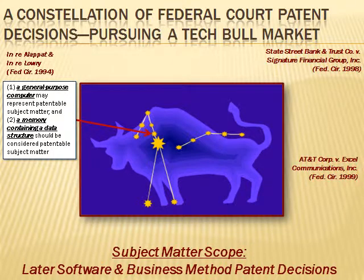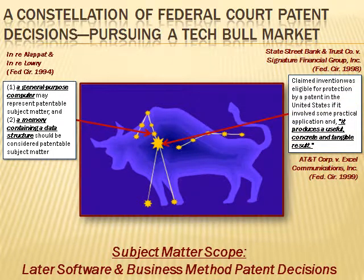Following the 1994 decisions of Allopat and Lowry, the State Street Bank and Trust Company v. Signature Financial Group case, also of the Federal Circuit, held in 1998 that software programs that transform data are patentable subject matter under Section 1 of the Patent Act, even when there is no physical transformation of an article.